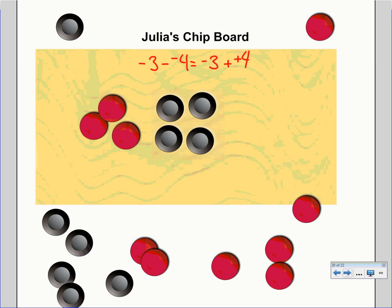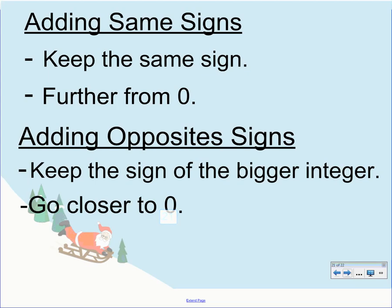Hopefully that clears up the chip method. It's very valuable, especially with smaller numbers, just to get the basic concept down. Now let's look at the rules we discovered. When adding the same signs, you keep the same sign: positive plus positive is going to be positive, and negative plus negative is going to be even more negative — you're going further from zero in either direction.